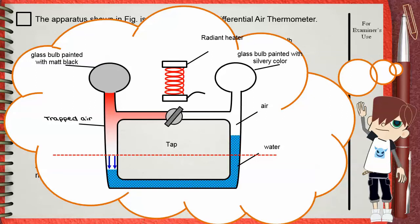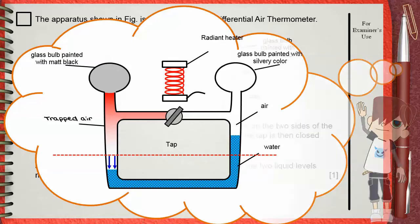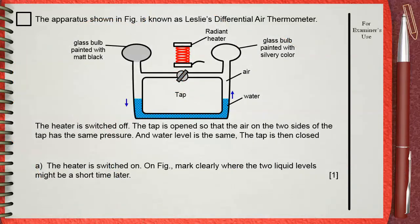Now he wants us to do that on our diagram. Simply, one side will go down, another side will go up, and these are the new levels shown by the dotted lines.